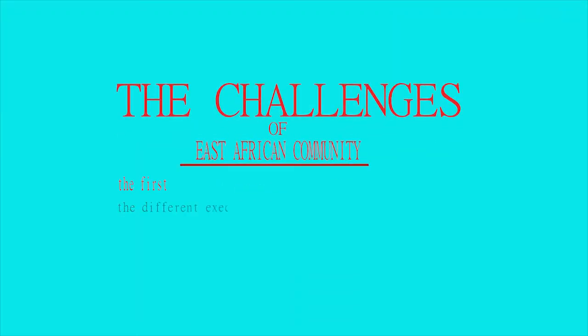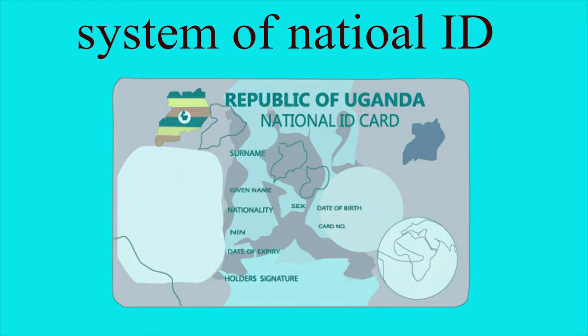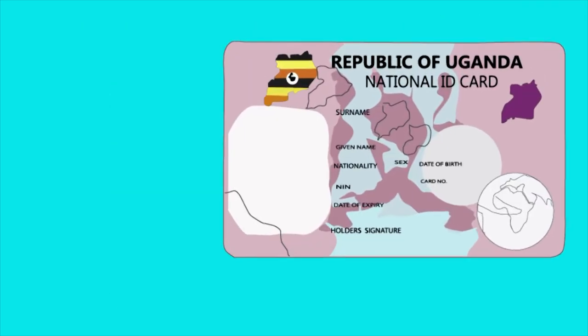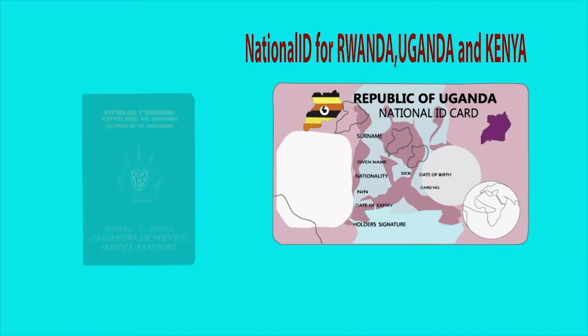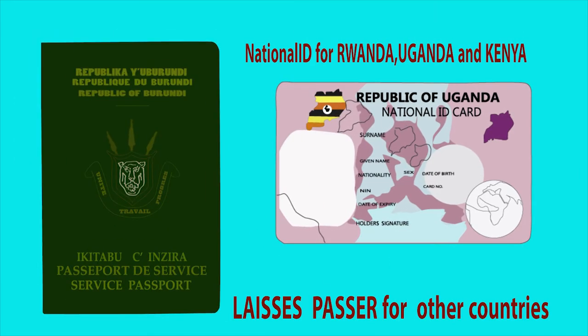Now let's talk about the challenges of the East African community. The first is the different execution of countries' borders. Uganda and Kenya are using one system of national ID, while other countries are still using passports.